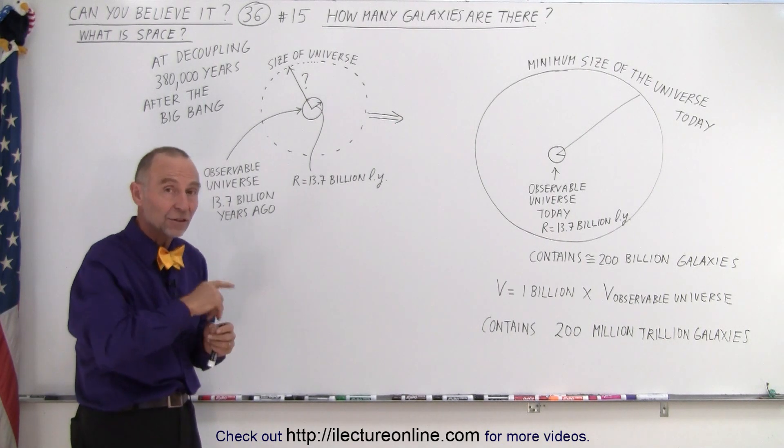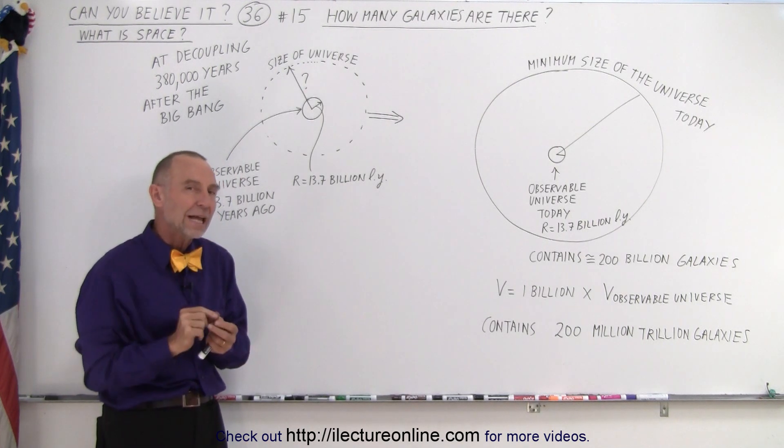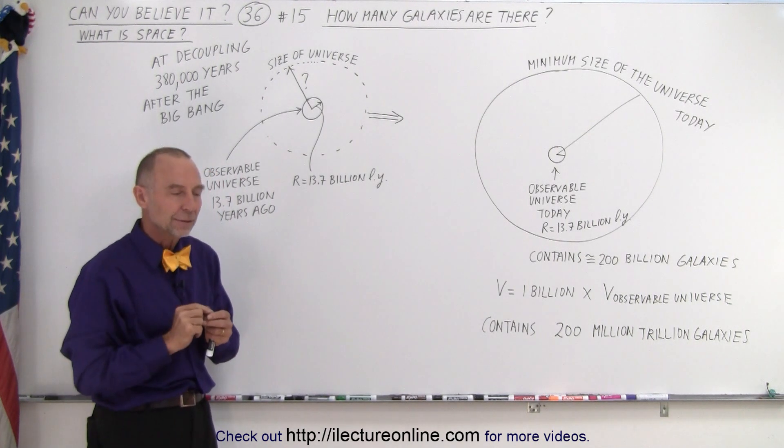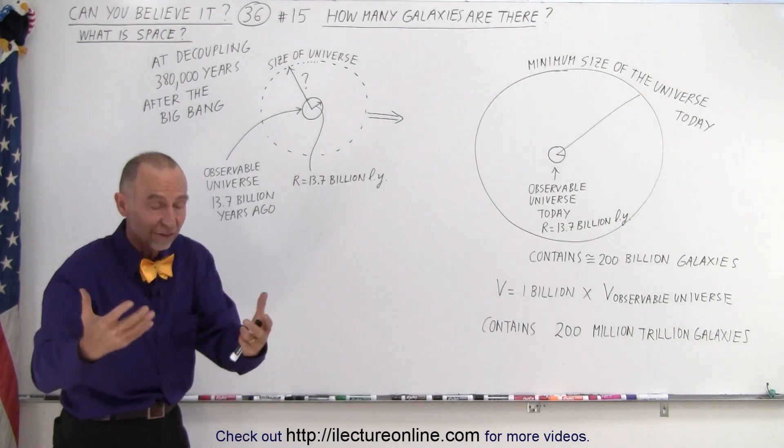We also know that back then the temperature was about 3000 Kelvin and the wavelength of that radiation was about a micrometer. And we know that the universe has stretched, has expanded, because space has expanded.